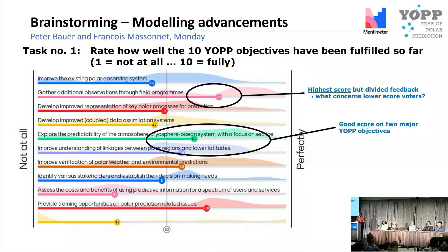The second objective scoring best was the predictability of the atmosphere-cryosphere-ocean system, which is one of the pillars of the Year of Polar Prediction.